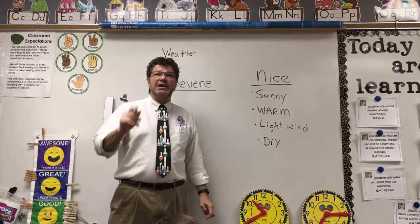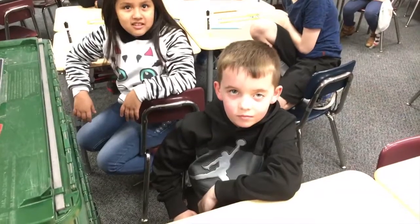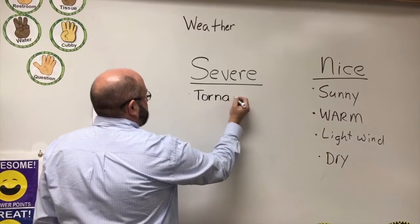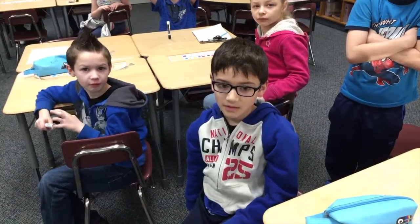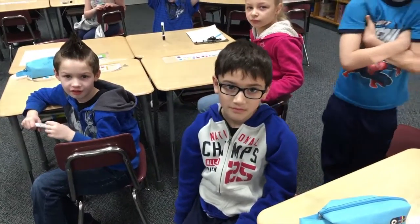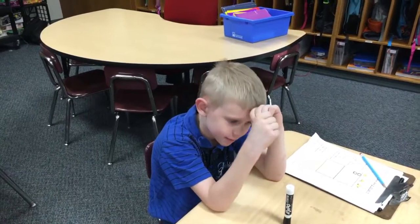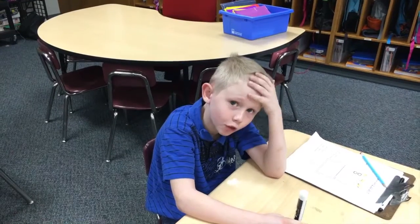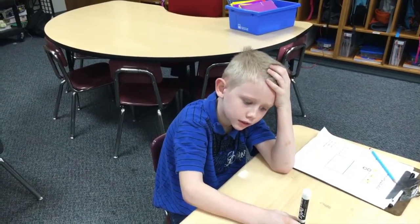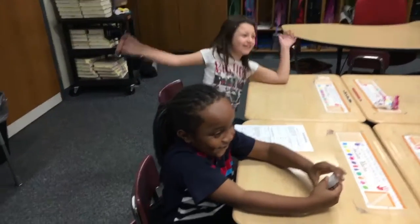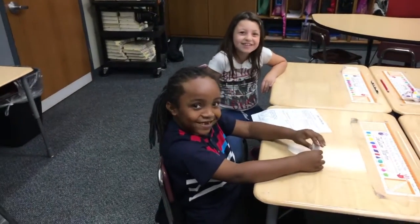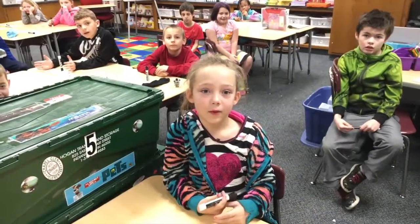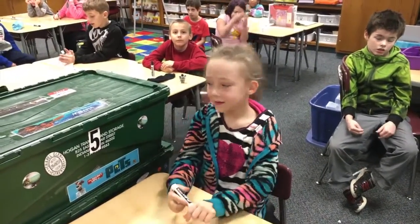Severe weather means you better take some protection — you better maybe not go out in it. What is severe weather? It's like a tornado — you're right. What else? A blizzard, and a blizzard is a lot of snow. A hurricane — now we live in Indiana, do we get many hurricanes here? No, but if you lived in Florida or California. A lightning storm — lightning is severe, stay away.